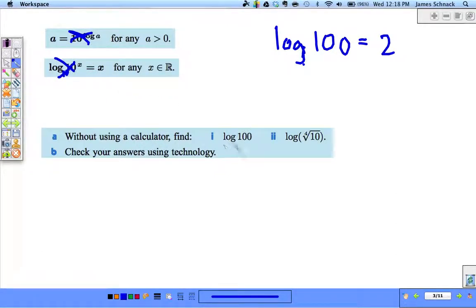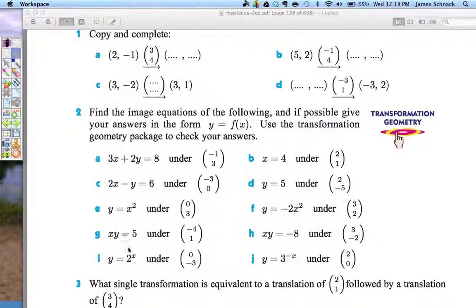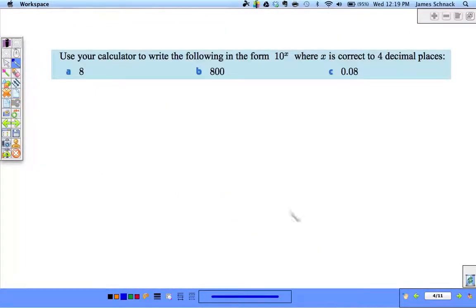So without a calculator, find log of 100. Log base 10 of 10 squared is equal to 2. Log base 10 of 10 to the 1 fourth is equal to 1 fourth. And we can plug this into our calculator easy enough. So since I'm unprepared and don't have my calculator loaded, we'll come back to this in just a second. Let's go on here.